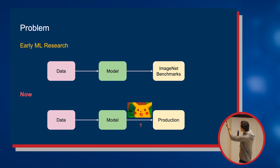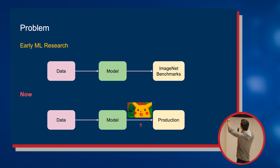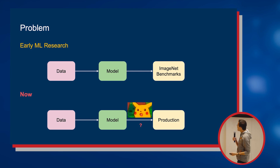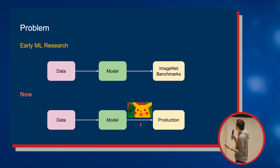The early ML research was basically all just trying to see if we could get stuff to work. You have data, you put it into a model, and you post your results on the benchmarks. Nowadays the stuff works, though. And so now we have to put it into production — we have to figure that part out.